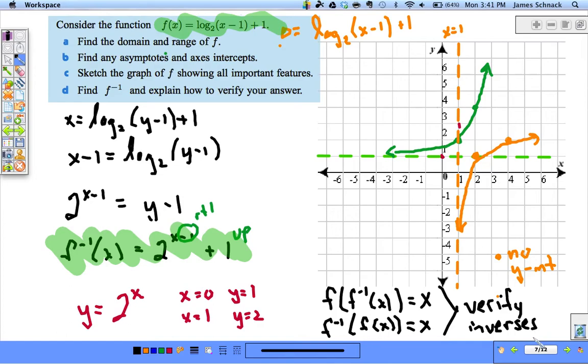So notice I didn't go through A through D in that order. I find it much easier, if I'm graphing by hand, to graph a power function, a simple power function, then shift it, and then switch the domain range. And that's one thing I forgot to write down, isn't it?